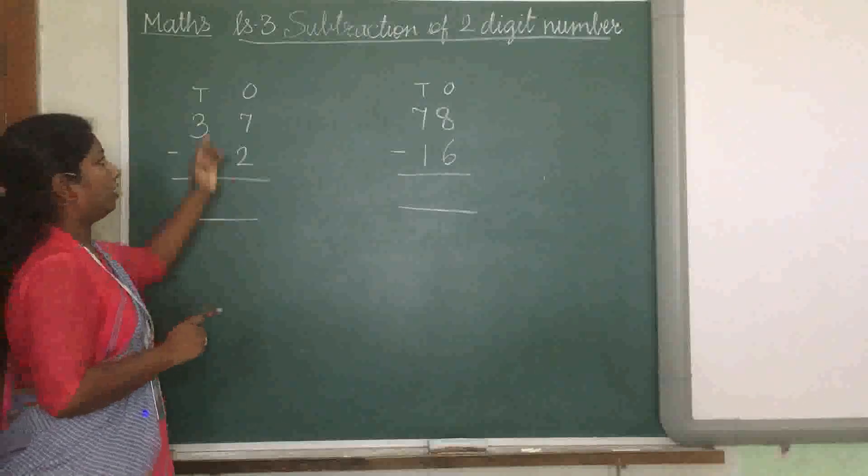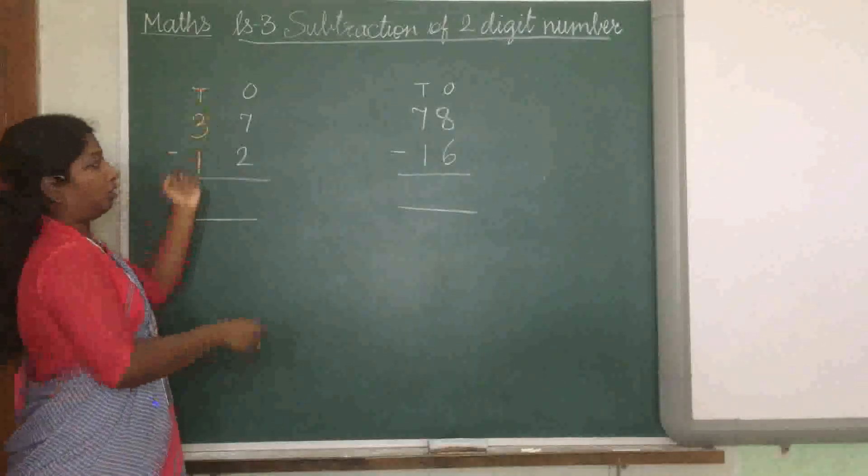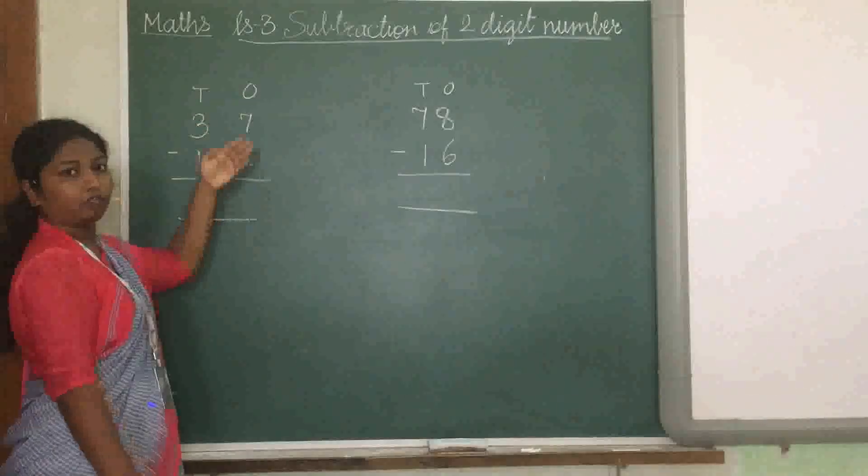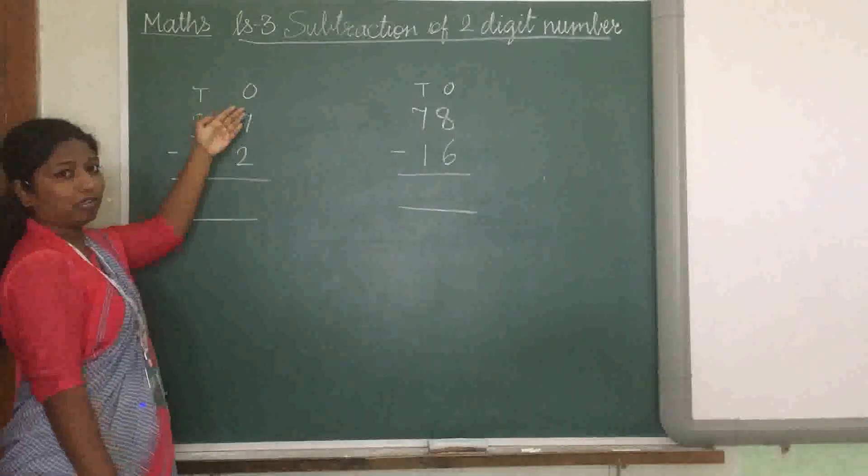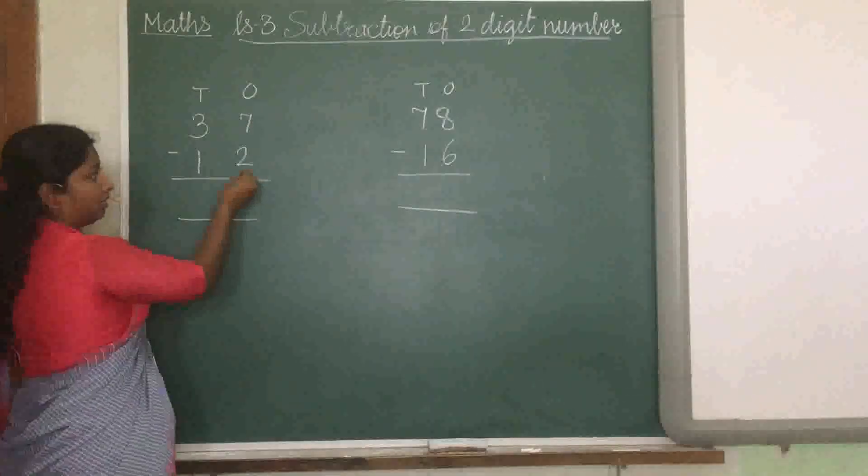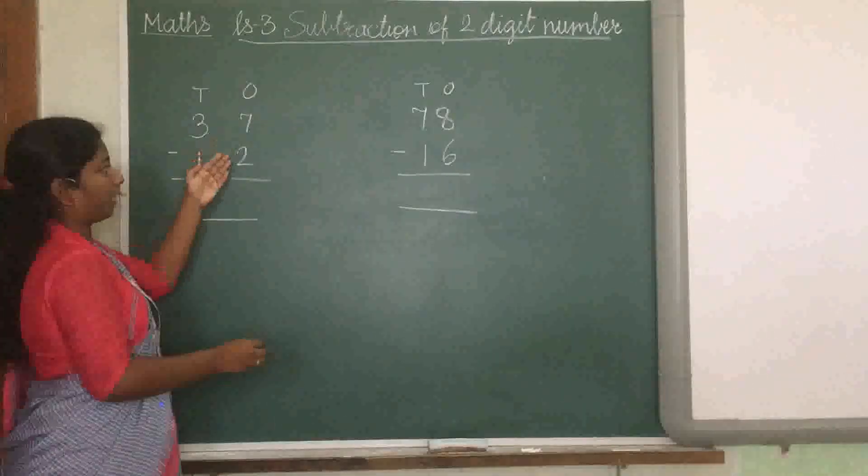So first I say to you that always we are solving the ones part first, the place value ones part. Okay. So this is 7 and this is 2. So we have to subtract.